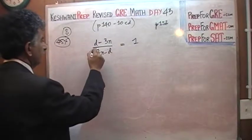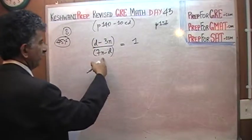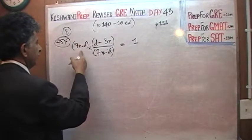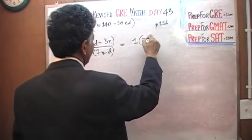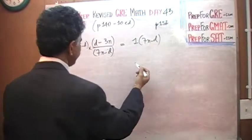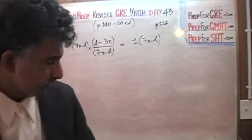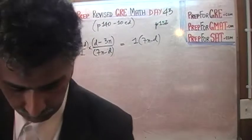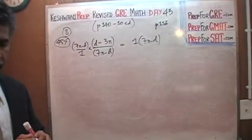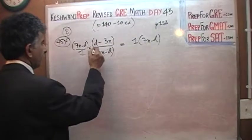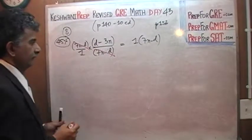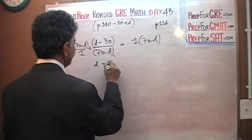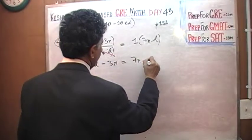The very first thing I want to do is get rid of this denominator. Multiply both sides by 7N minus D. Since we have the same thing on the numerator and the denominator, we can get rid of it. Now we are left with D minus 3N equals 7N minus D.